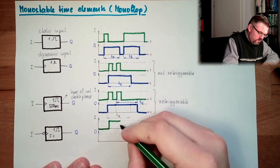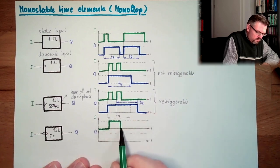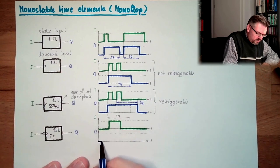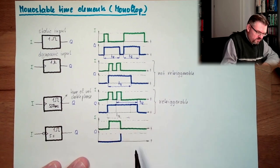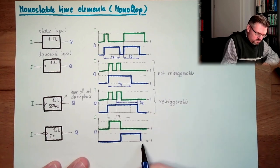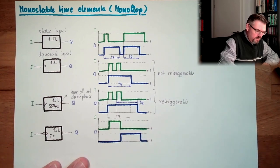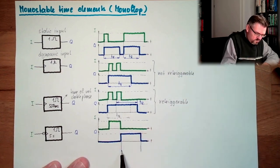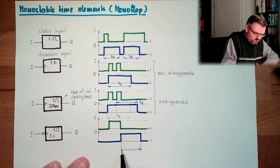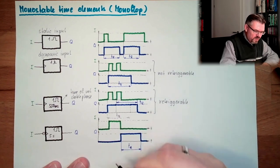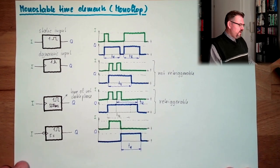And here again we have dq. Simply the trigger event is somewhere else.